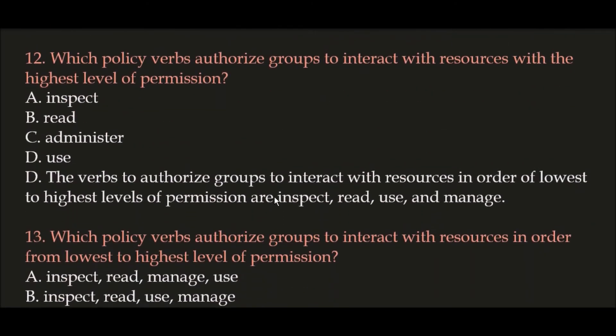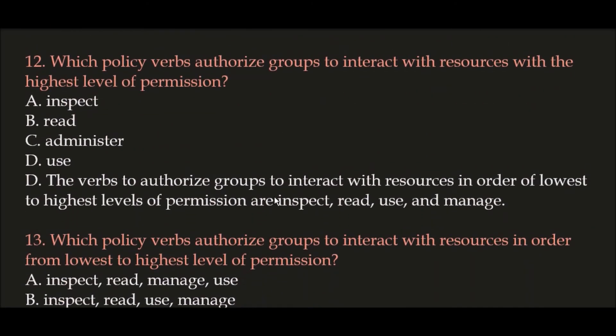Question 12: Which policy verbs authorize groups to interact with resources with the highest level of permission? Option A: Inspect, Option B: Read, Option C: Administer, Option D: Use. The verbs to authorize groups to interact with resources in order from lowest to highest levels of permission are: Inspect, Read, Use, and Manage.